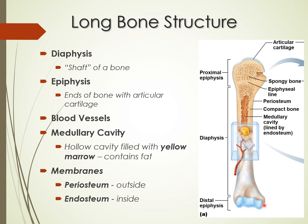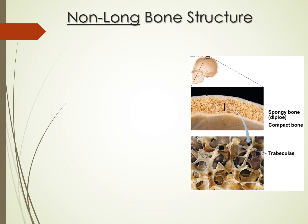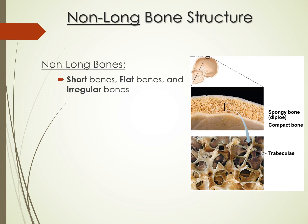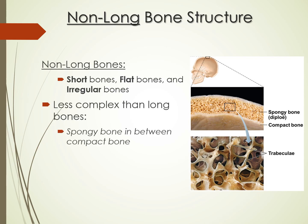Bones have membranes just like cartilage. The periosteum covers all outside bone surfaces where there is no cartilage — cartilage has its own perichondrium, so no periosteum there. The endosteum lines all internal surfaces — the medullary cavity, trabeculae of spongy bone, and canals. Every surface of the bone has a membrane on it, except where cartilage is.